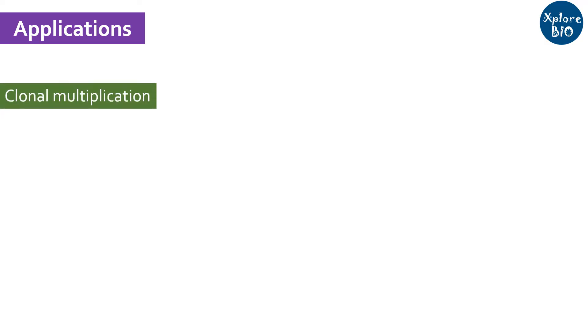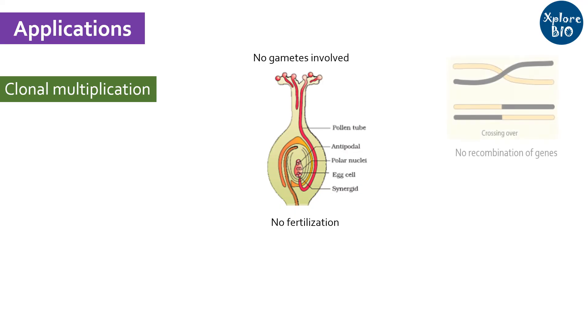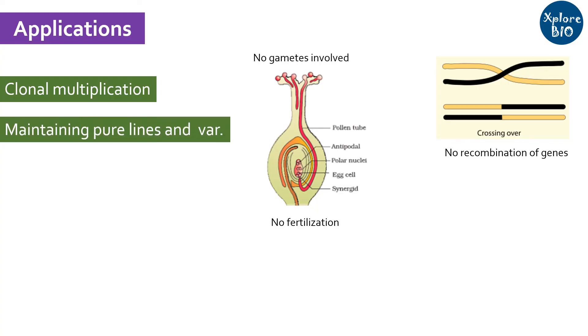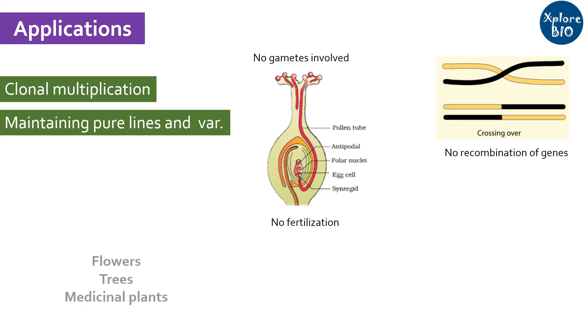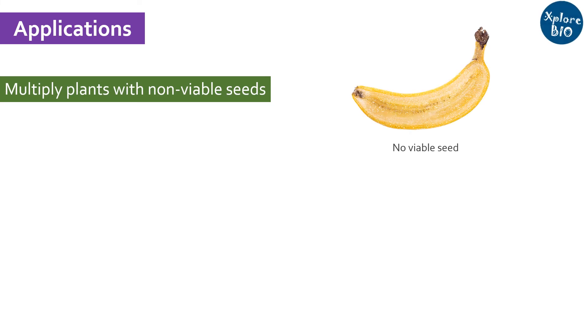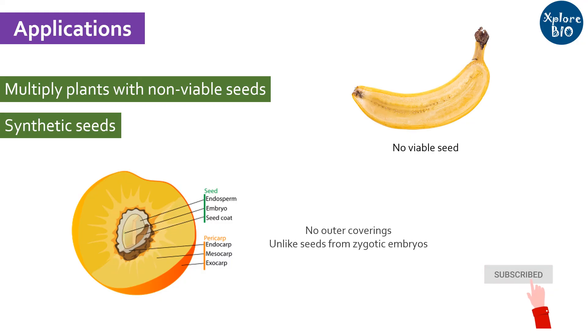There are several advantages of somatic embryogenesis over natural or zygotic embryogenesis, which makes them useful for wide applications. In the case of somatic embryogenesis, you can generate clonal individuals as there is no fertilization and no recombination of genes. Therefore, it is an important method for maintaining and propagating pure lines and varieties of commercially valuable trees, flowers, and medicinal plants. Some plants which do not produce viable seeds, for example banana, can easily be multiplied by producing somatic embryos. The somatic embryos can also be used to produce synthetic seeds, though they lack a seed coat and other outer coverings unlike seeds developed from zygotic embryos.